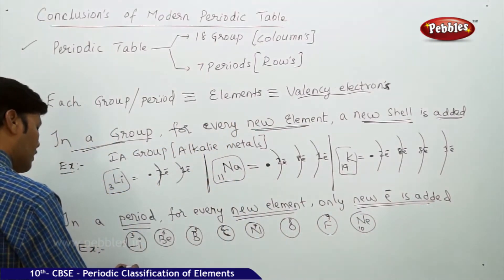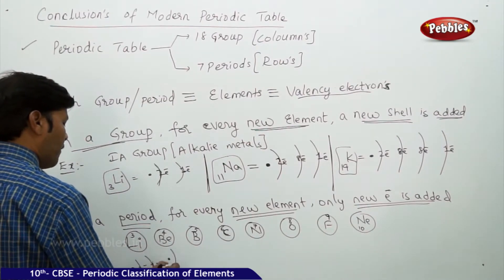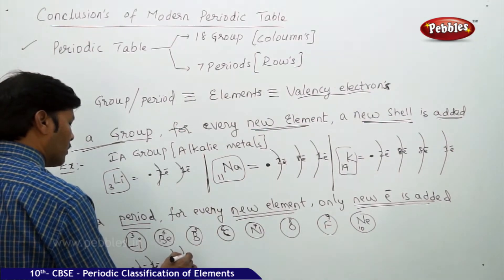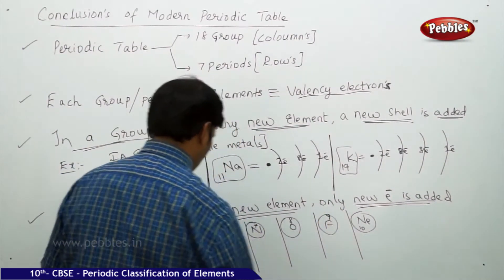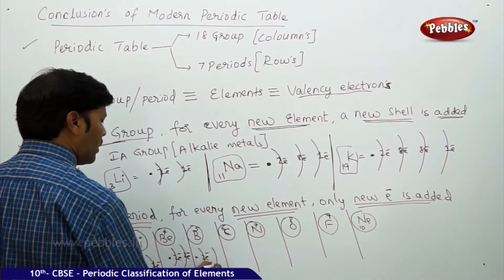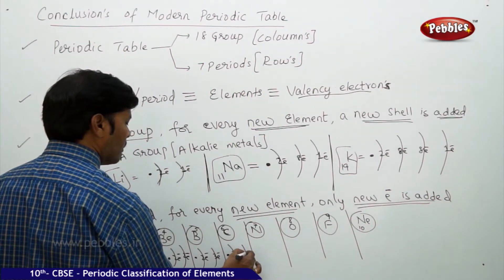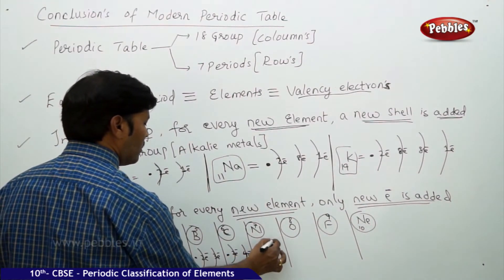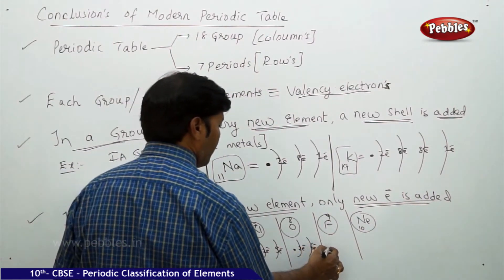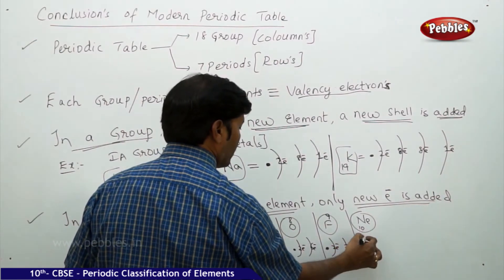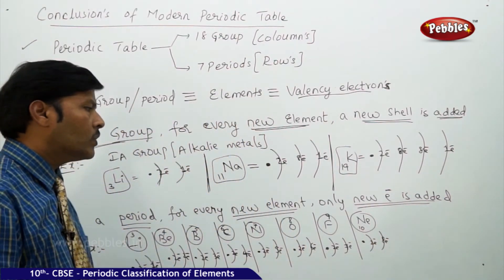For lithium: nucleus, first orbit two electrons, second orbit one electron — only two shells. For beryllium: two electrons and two electrons. For each subsequent element, only a new electron is added to the valency shell: boron has five electrons in the second shell, nitrogen two and five, oxygen two and six, fluorine two and seven, neon two and eight, and so on.